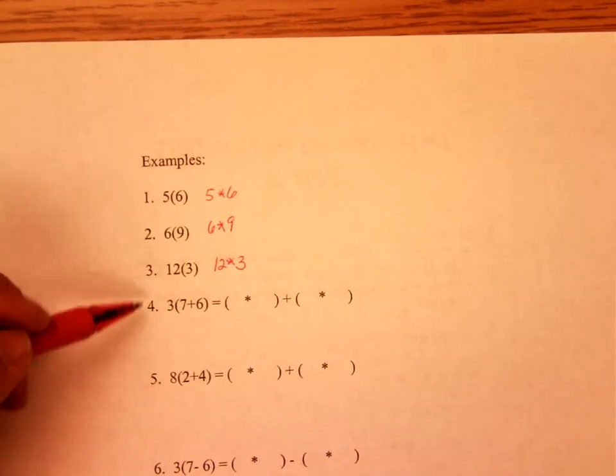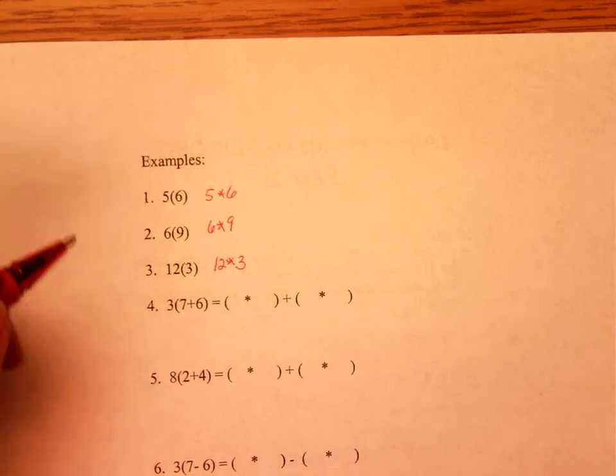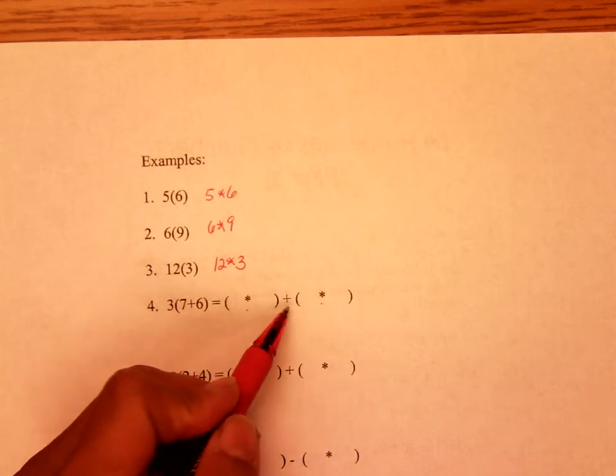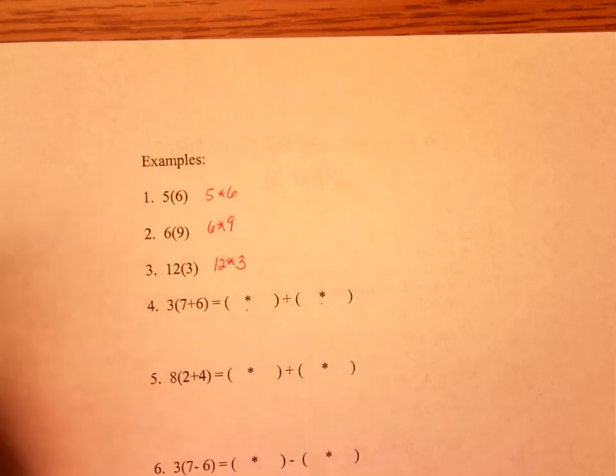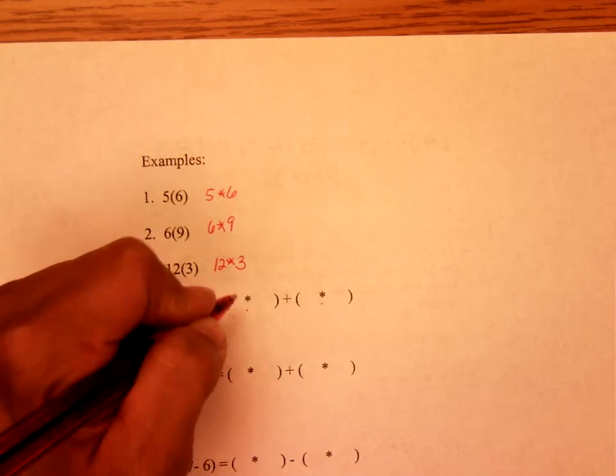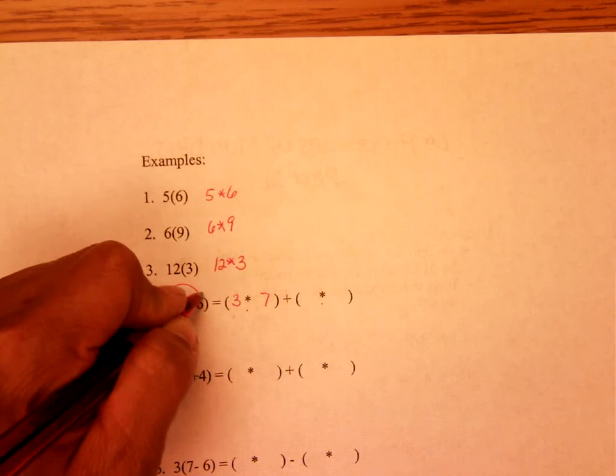Alright, 4, 5, 6, we're going to do together. So here, we've given you the parentheses and put the multiplication and the plus, but now you got to fill in the numbers. Remember, the first parentheses, you write the 3 times the 7. The second parentheses would be 3 times the 6.